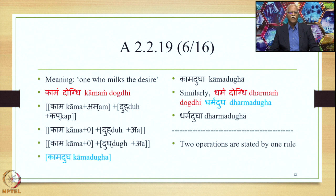We note that this Sutra Duhakkabhashcha is stating two operations: first, the addition of the suffix Kap immediately after the verbal root Duh, and second, the substitution of Gha in place of H, which is part of the verbal root Duh.